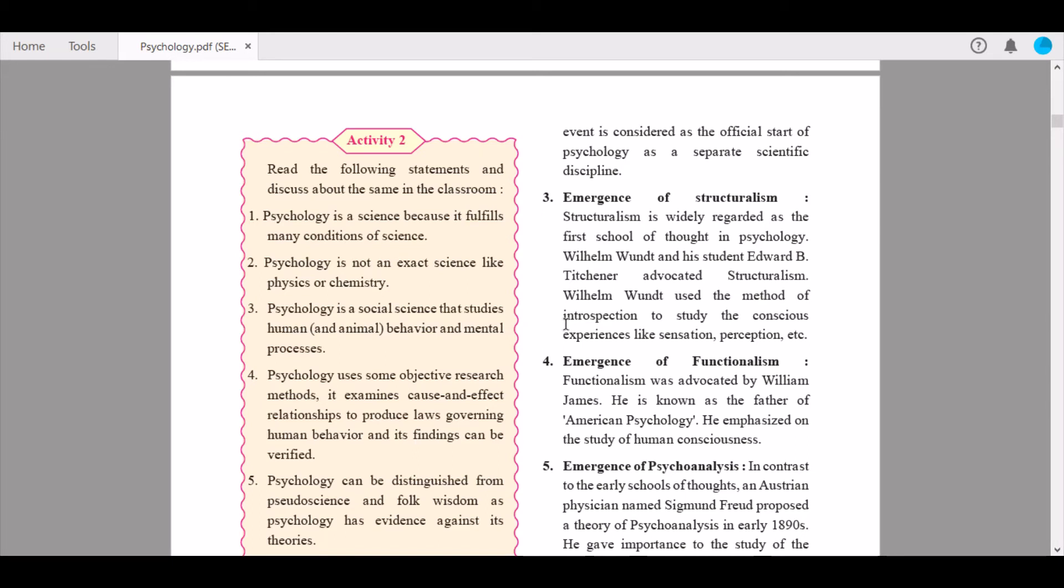Third is emergence of structuralism. Structuralism is widely regarded as the first school of thought in psychology. Wilhelm Wundt and his student Edward B. Titchener advocated structuralism. Wilhelm Wundt used the method of introspection to study conscious experiences like sensation, perception, etc.